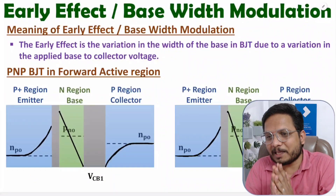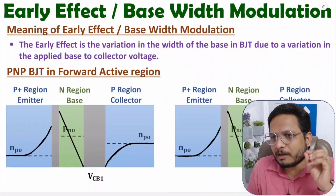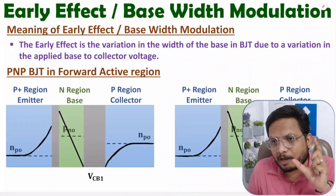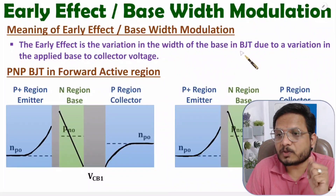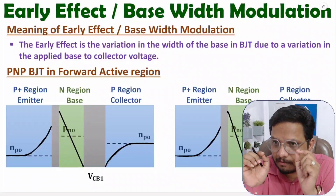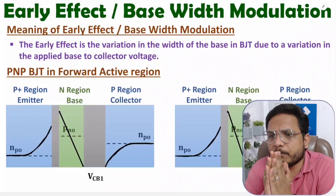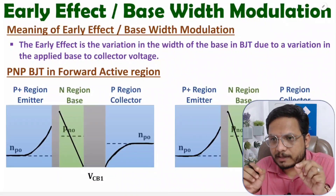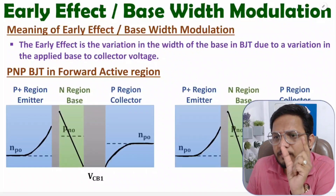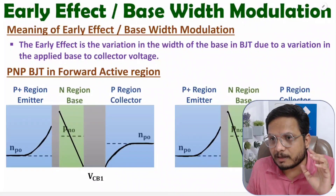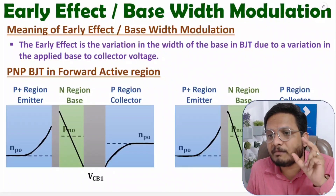Hello friends, welcome to Engineering Funda Family. In this video I'm going to explain the Early Effect, also known as base width modulation. Early effect is the variation in width of the base in a BJT — we change the base width by varying the applied base-to-collector voltage VCB. By changing VCB we modulate the width of the base, hence the name base width modulation.